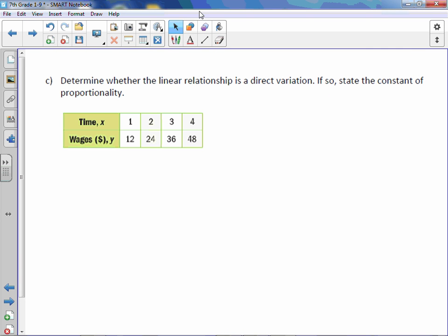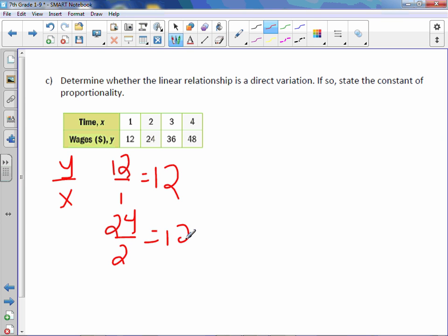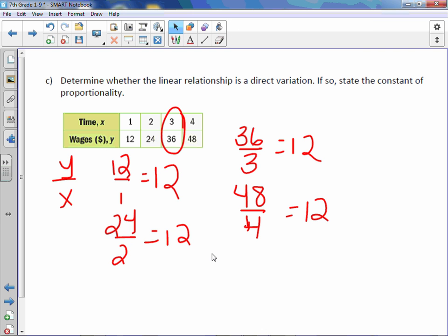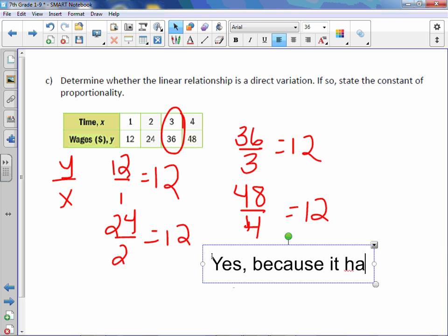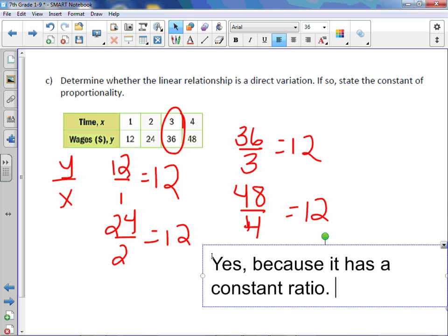Letter C. Determine whether the linear relationship is a direct variation. If so, state the constant of proportionality. So we don't have a graph this time, but that's okay. We can take our y value divided by x. So 12 divided by 1 is 12. 24 divided by 2 is 12. I'm getting these from the table. 36 divided by 3 is 12. And 48 divided by 4 is 12. Now, they all have 12 as their ratio. So is it a direct variation? I would say yes.